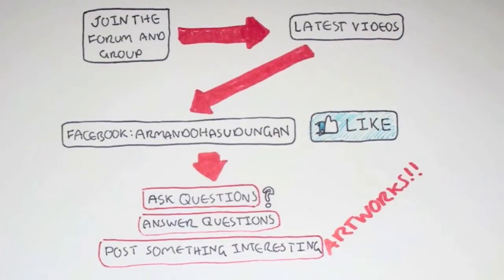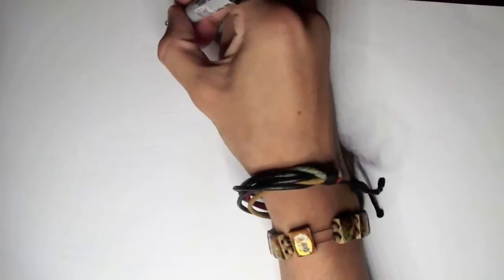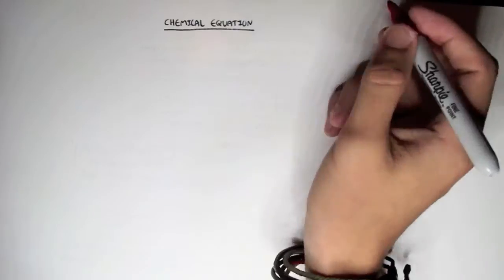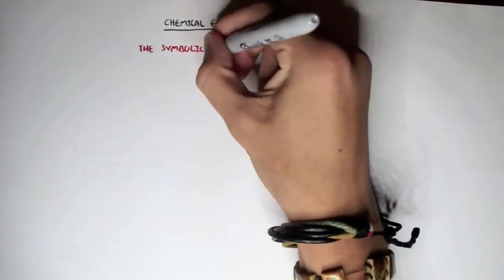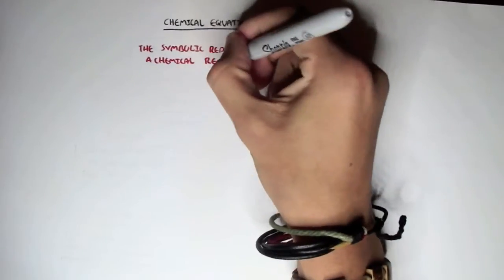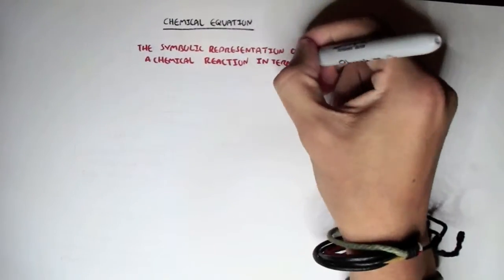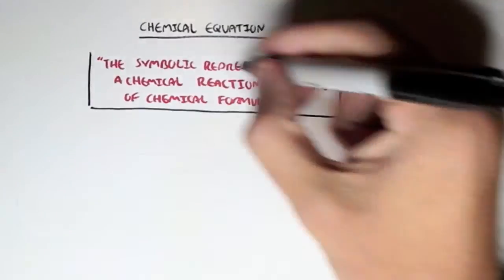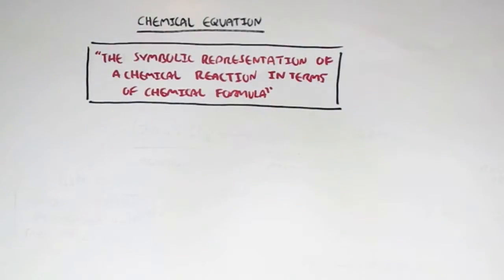In this video, we're going to talk about chemical equations. A chemical equation is defined as a symbolic representation of a chemical reaction in terms of a chemical formula. So the chemical reaction can be drawn out as a chemical formula, which is the chemical equation.